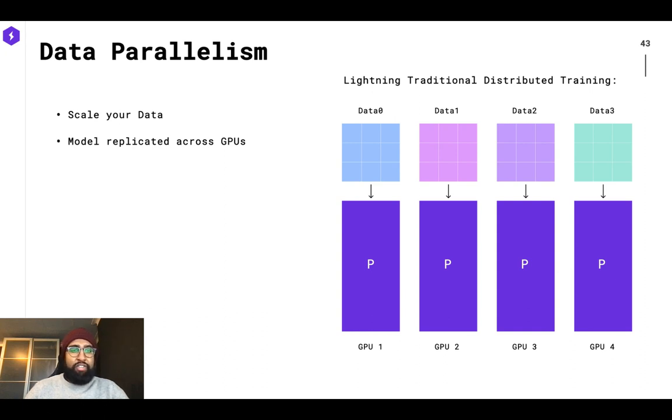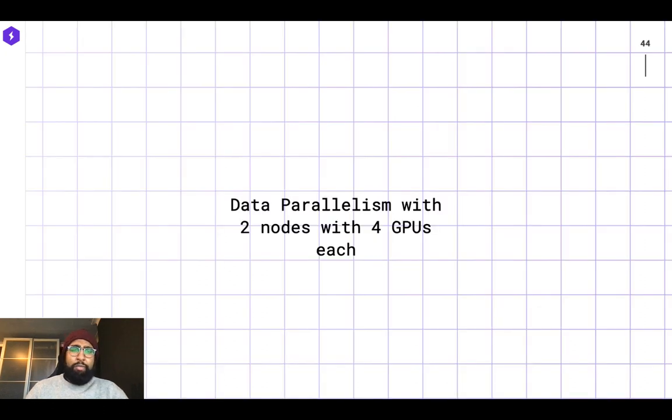But before we jump into sharded training, I want to ensure we understand what's happening at simpler paradigms. Now, data parallel is a very common procedure that's used by many users. I have one model, and I would like to scale to multiple GPUs. How could I do this? Very intuitively, it makes sense to just scale the data. If I replicate my model across my GPUs and provide a different batch of data for each one of these GPUs, I can scale my training from a data level. And most users are familiar with this. In PyTorch, this is data parallel, or DDP, distributed data parallel, and has become a staple of training. And the elegancy of it makes it very widely adopted.